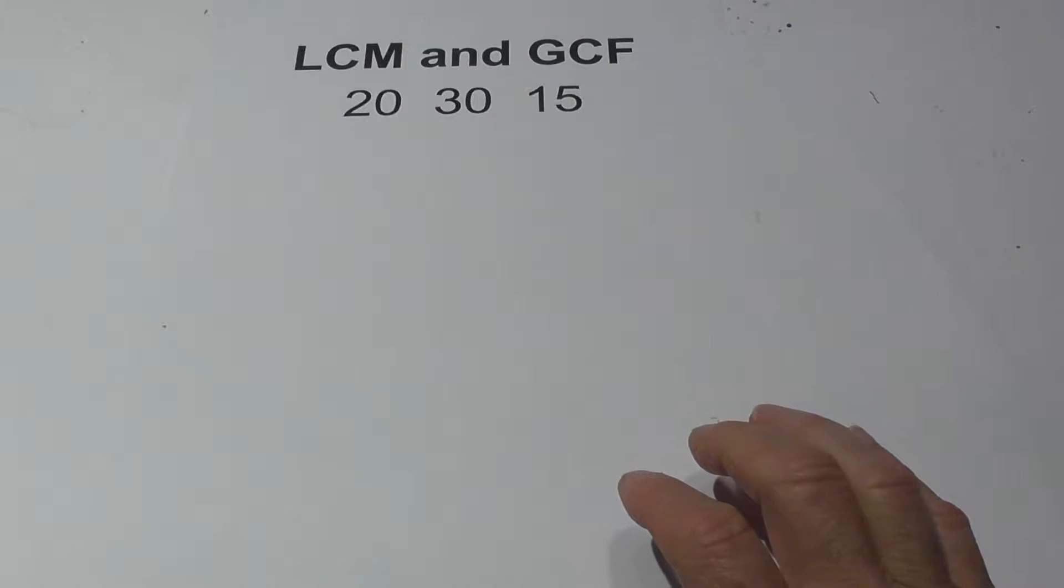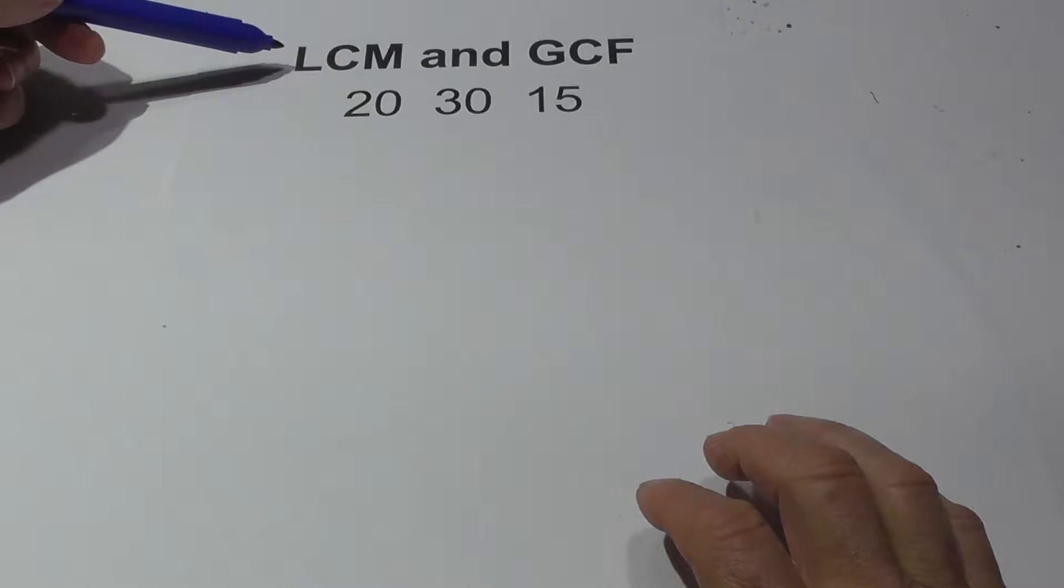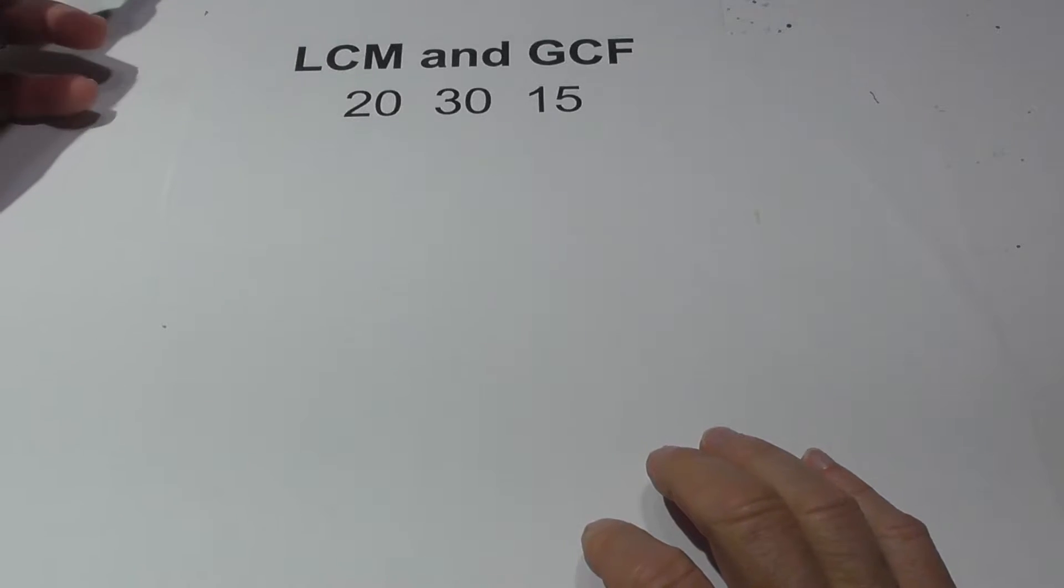Welcome to Moomoo Math and Science. In this video, let's find the LCM, or Lowest Common Multiple, and the GCF of 20, 30, and 15.